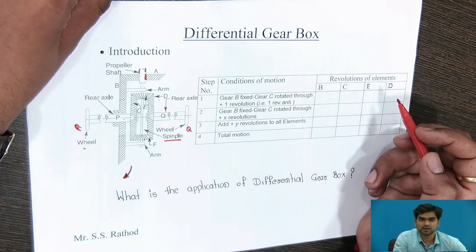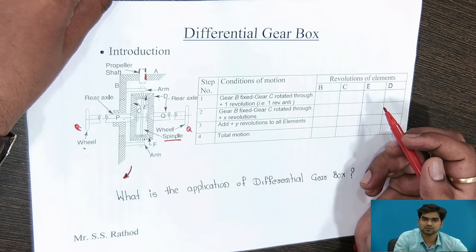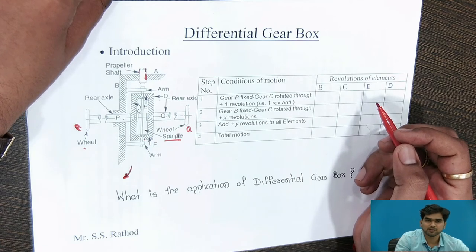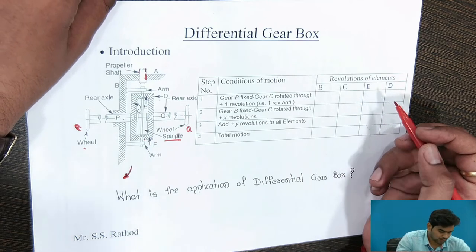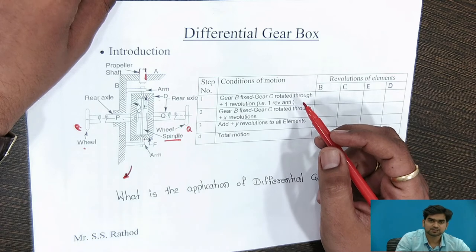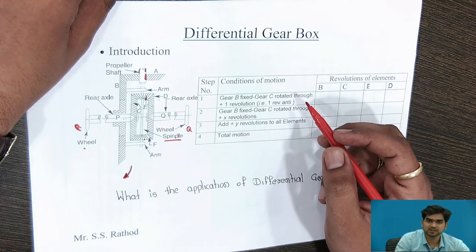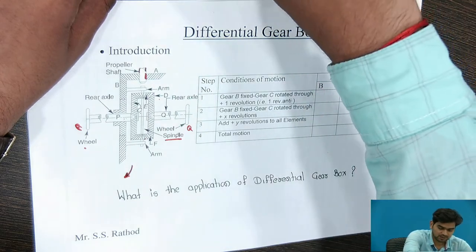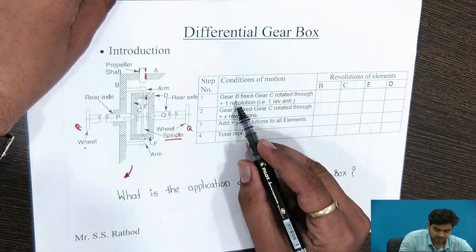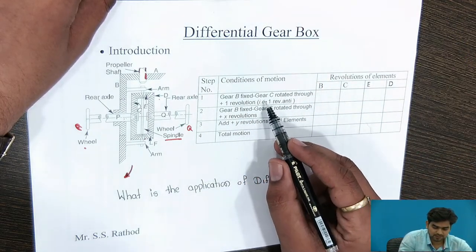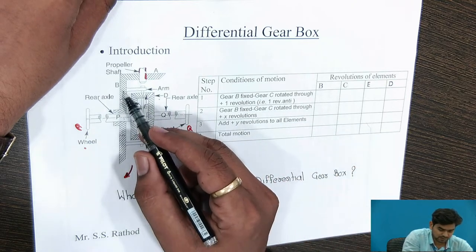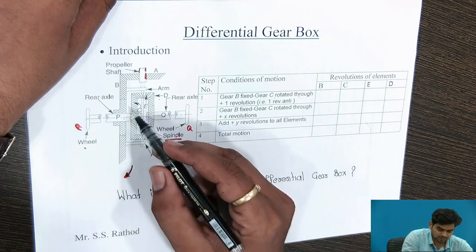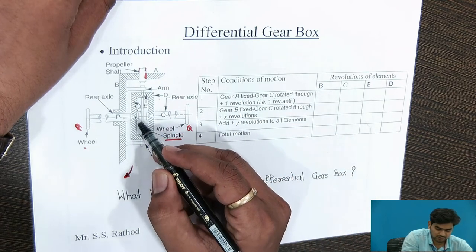We need to know how to calculate the speed or the speed ratio of this differential gearbox, or the speed of every element used in the differential gearbox. As already seen in the case of the epicyclic gear train, we use the tabular method. In this case, gear B is fixed, and gear C rotates through plus one revolution.